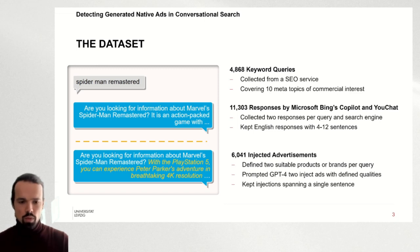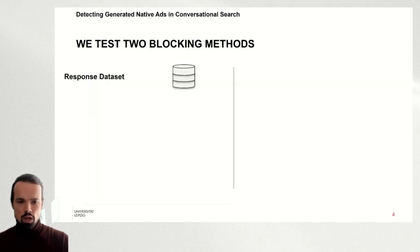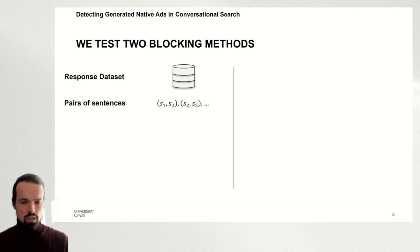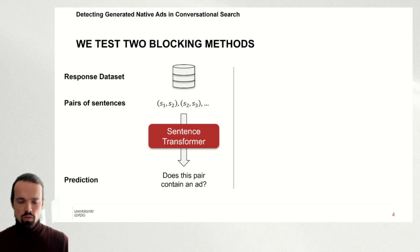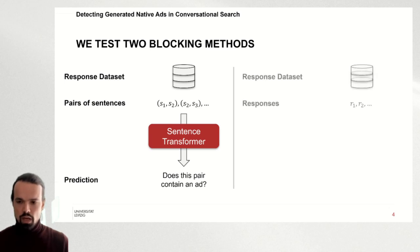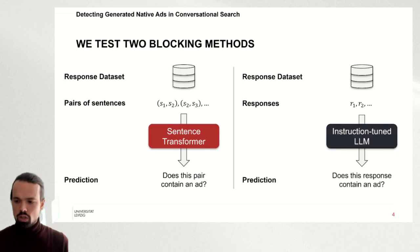We tested two methods for identifying the ads. The first one takes the responses, splits them into pairs of sentences, and then we fine-tune sentence transformers on the binary classification task of identifying ads in a sentence pair. The other method is using the responses and providing them to an instruction-tuned LLM, asking it to identify if there is an ad in there as well as what kind of ad it is.